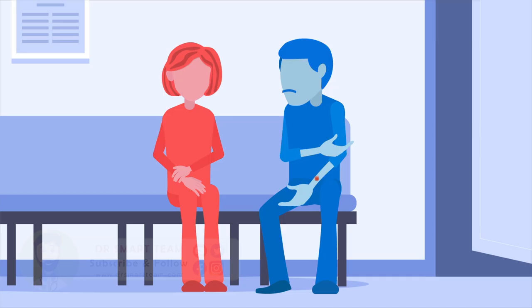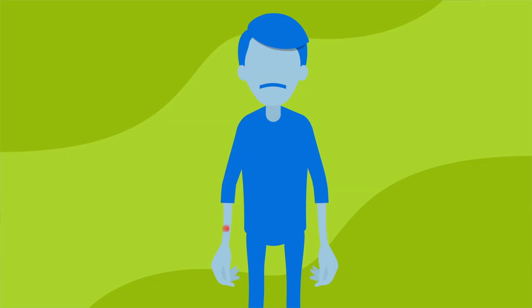Stay calm and don't move the bitten area too much so the poison does not spread quickly from the wound to the body. Try to keep the affected part of the body below the level of your heart. By doing this, you can slow the spread of the venom to the body.